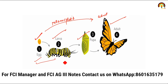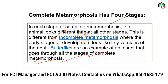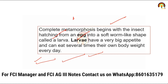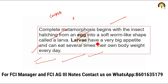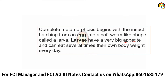Larva बनने के बाद कुछ अलग structure दिखेगा, pupa में कुछ अलग होगा, और adult में कुछ अलग होगा — body में changes देखने को मिलते हैं। This is different from incomplete metamorphosis. Complete metamorphosis begins with the insect hatching from an egg into a soft, worm-like shape called a larva. Larva have a very big appetite and can eat several times their own body weight every day — इनकी consumption efficiency बहुत high होती है as compared to their body weight.